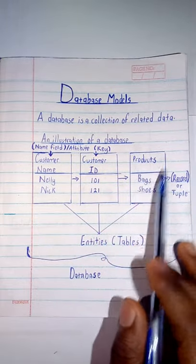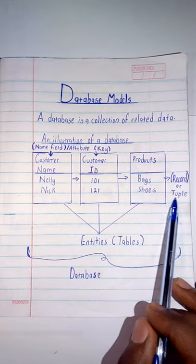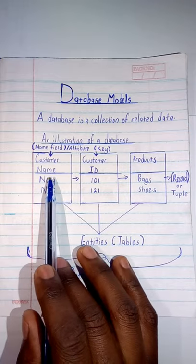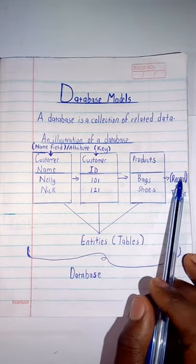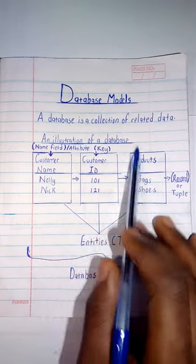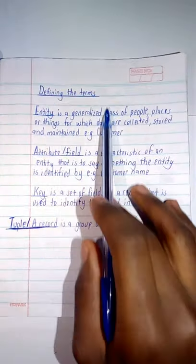The entire row is what I'll call a record or a tuple. So this and this form what is called a record. So the combination of all this is what I combine and I call a database.